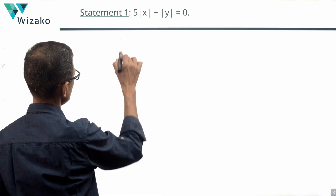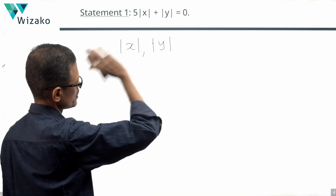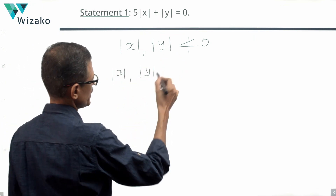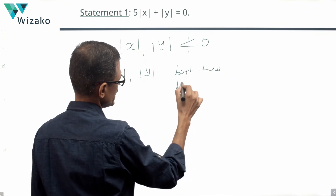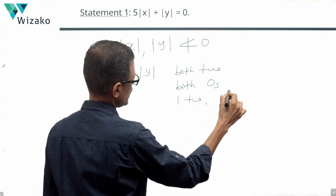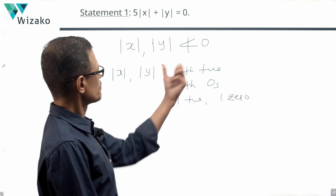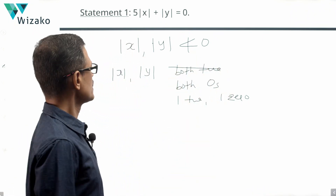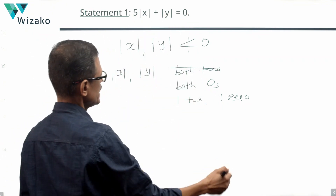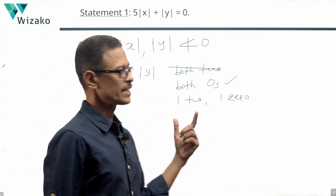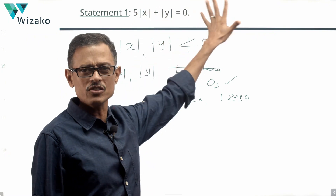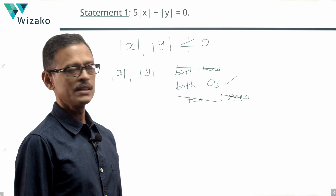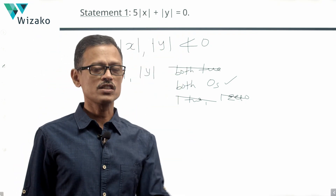But hold on — what do we know about the modulus of any number? The modulus of X and the modulus of Y, for that matter the modulus of any number, cannot be negative. So modulus of X and modulus of Y can both be positive, both zero, or one positive and one zero. If both are positive, 5 times a positive plus another positive can never equal 0 — ruled out. If both are zero, 5 times 0 plus 0 equals 0 — that works. If one is positive and the other is zero, the sum is still positive, not zero — also ruled out.